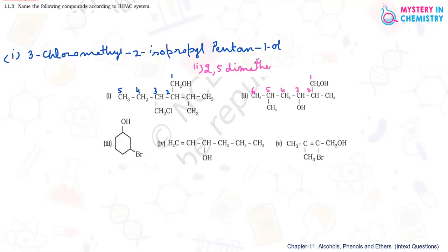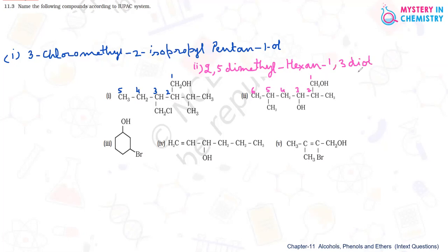2,5-dimethyl, then hexane. The last 'e' is replaced by 'ol'. Here it is 1,3-diol, as two OH groups are present at the first and third positions. So 1,3-diol is the final name of the second compound: 2,5-dimethylhexane-1,3-diol.